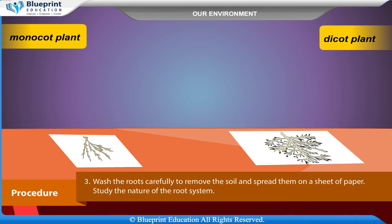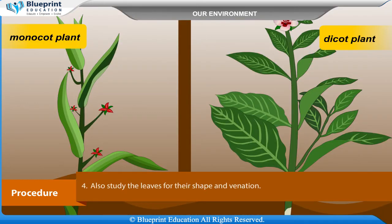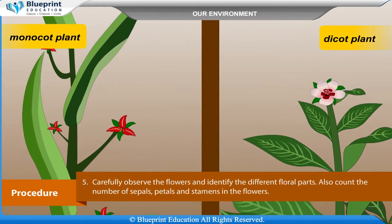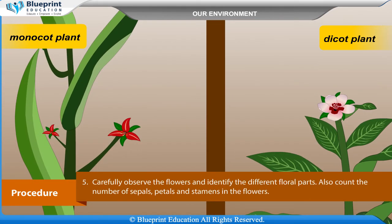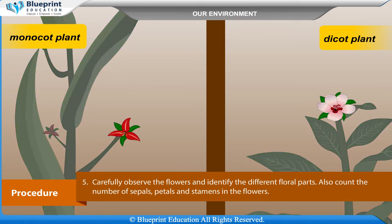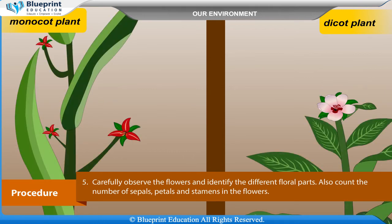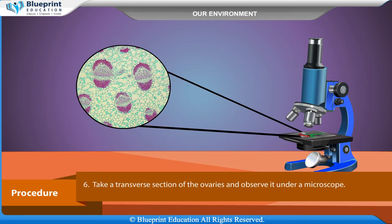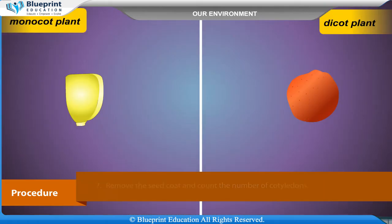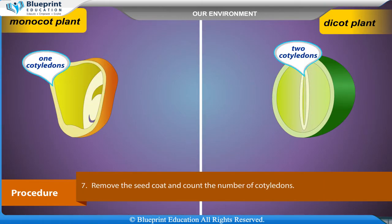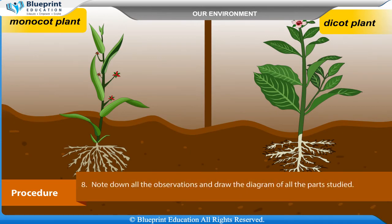Also study the leaves for shape and venation. Carefully observe the flowers and identify the different floral parts. Count the number of sepals, petals, and stamens in the flowers. Take a transverse section of the ovaries and observe it under a microscope. Remove the seed coat and count the number of cotyledons. Note down all the observations and draw diagrams of all the parts studied.